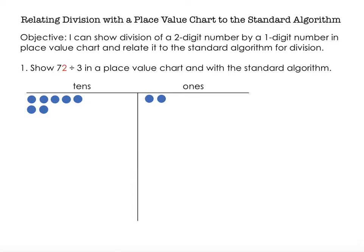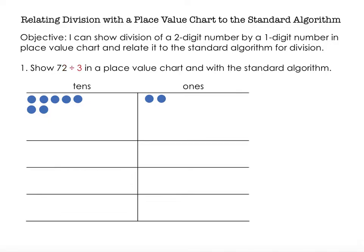Now I have my 72 in my place value chart. I want to show that I'm dividing it by three. I'm dividing into three equal groups. So I have three equal groups below with a tens place and a ones place. One, two, three equal groups.